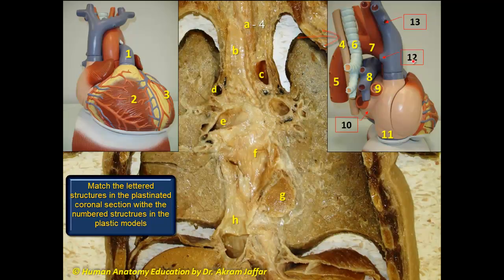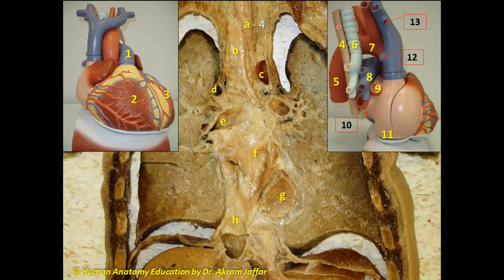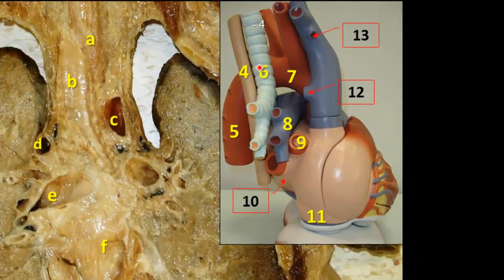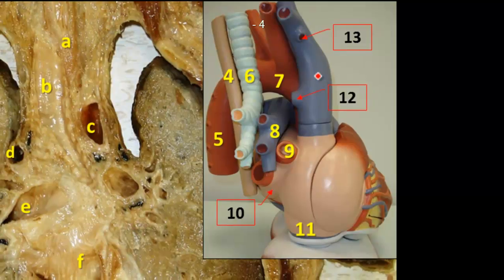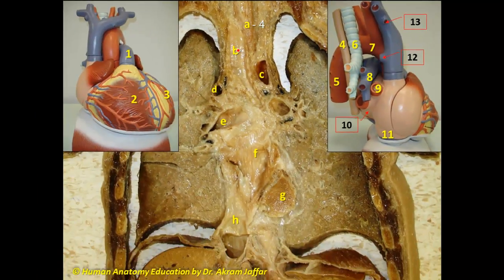In the plastic model, this is the anterior aspect and this is the posterior aspect. We can see that the most posterior structure is the esophagus. In front of the esophagus is the trachea. In front of the trachea, lower down, are the branches of the pulmonary trunk, and in front of that is the aorta and its branches. In front of that are the veins — the superior vena cava and the brachiocephalic veins. B is the trachea, and B matches with 6.